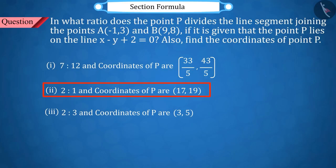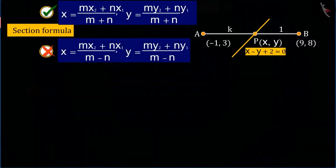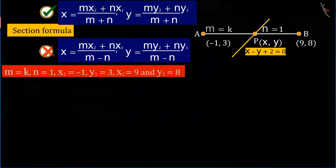If you chose the second option, it was a good try. But this is the wrong answer. Because in the section formula, in place of m + n, m - n was put and solved.